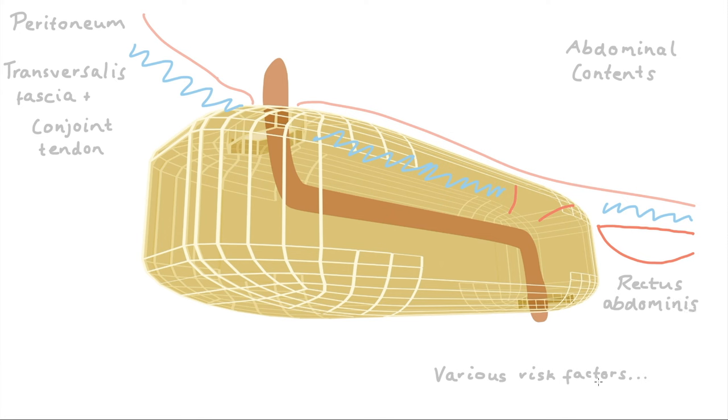So the two major issues that we can face here that can lead to a direct inguinal hernia are increased intra-abdominal pressure. For example, if you've got ascites which is fluid buildup in the abdomen from chronic liver disease. Or, if you've got weakness in any of these layers. Most relevant here is the transversalis fascia if you've got, say, an inherited deficiency in that. But also, general weakness of the abdominal wall muscles makes an inguinal hernia more likely.